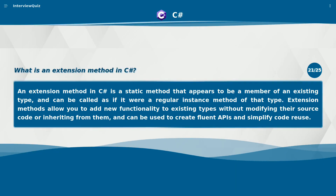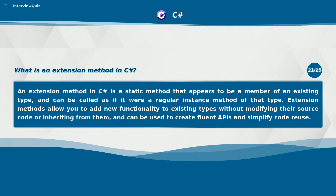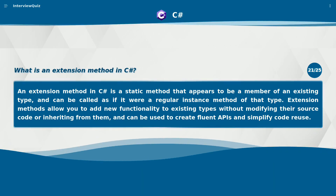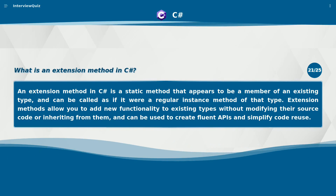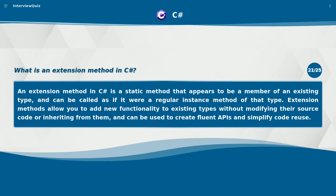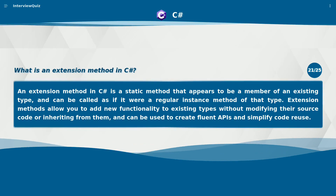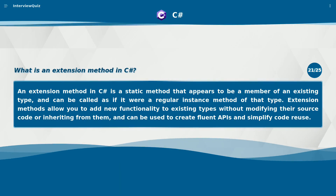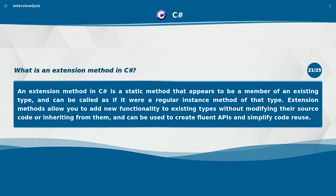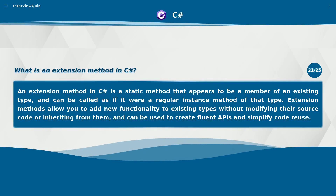What is an extension method in C#? An extension method in C# is a static method that appears to be a member of an existing type and can be called as if it were a regular instance method of that type. Extension methods allow you to add new functionality to existing types without modifying their source code or inheriting from them, and can be used to create fluent APIs and simplify code reuse.